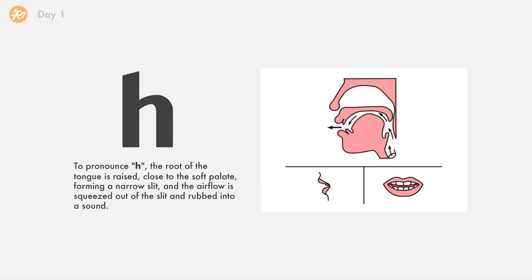The next one is h. To pronounce h, the root of the tongue is raised, close to the soft palate, forming a narrow slit, and the airflow is squeezed out of the slit and rubbed into a sound.